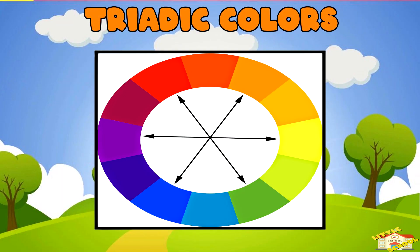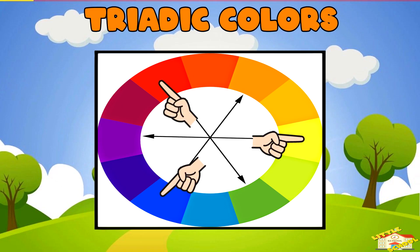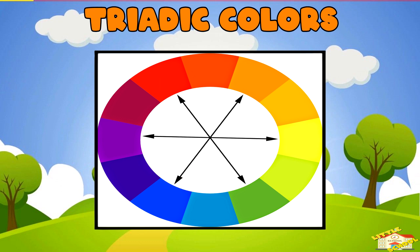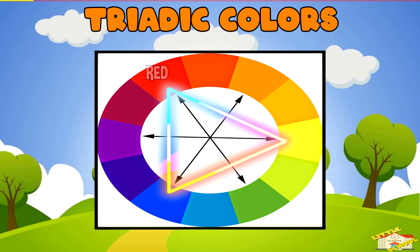Triadic colors. Triadic colors are three evenly spaced colors on the wheel for vibrant contrast. Examples would be red, yellow, and blue.